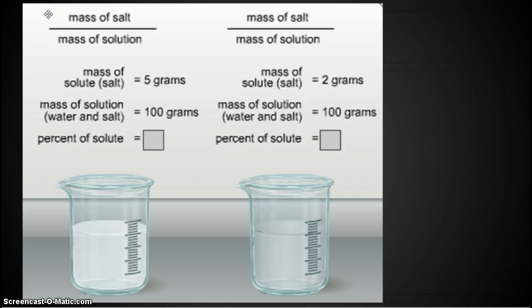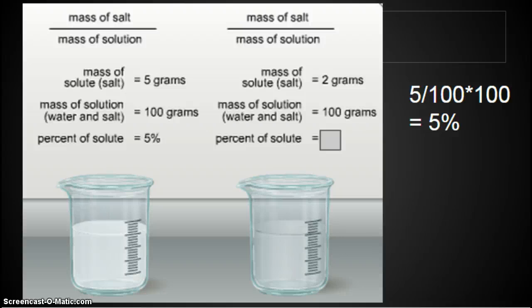So to find our percent, we have our mass of solute divided by mass of solution. Put that in your handy-dandy calculator. We have 5 grams of solute divided by 100 grams total, times 100 gives us 5 percent.